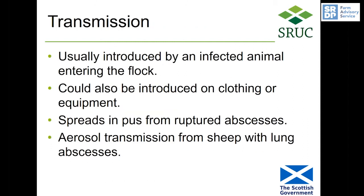In most cases, CLA is introduced to a flock by the addition of an infected animal. It could also potentially be introduced on clothing or equipment — for example, if you're handling sheep and an abscess bursts and you have pus on your clothing, and you then go and handle other sheep, that could spread the infection. If you have sheep with abscesses within their lungs, they could also spread the infection through the air.